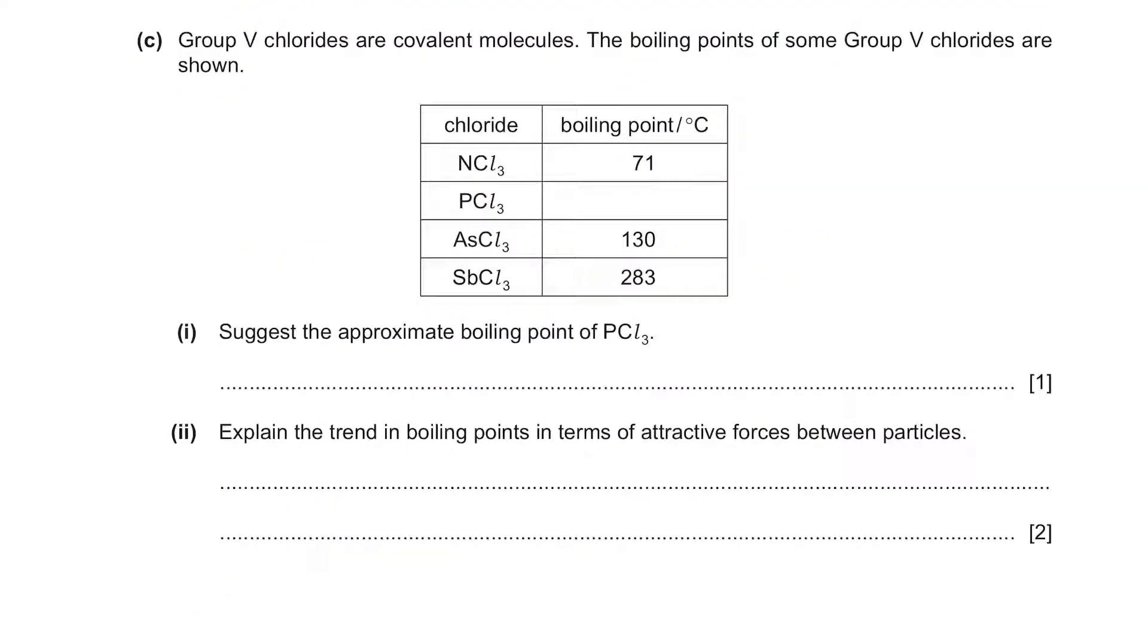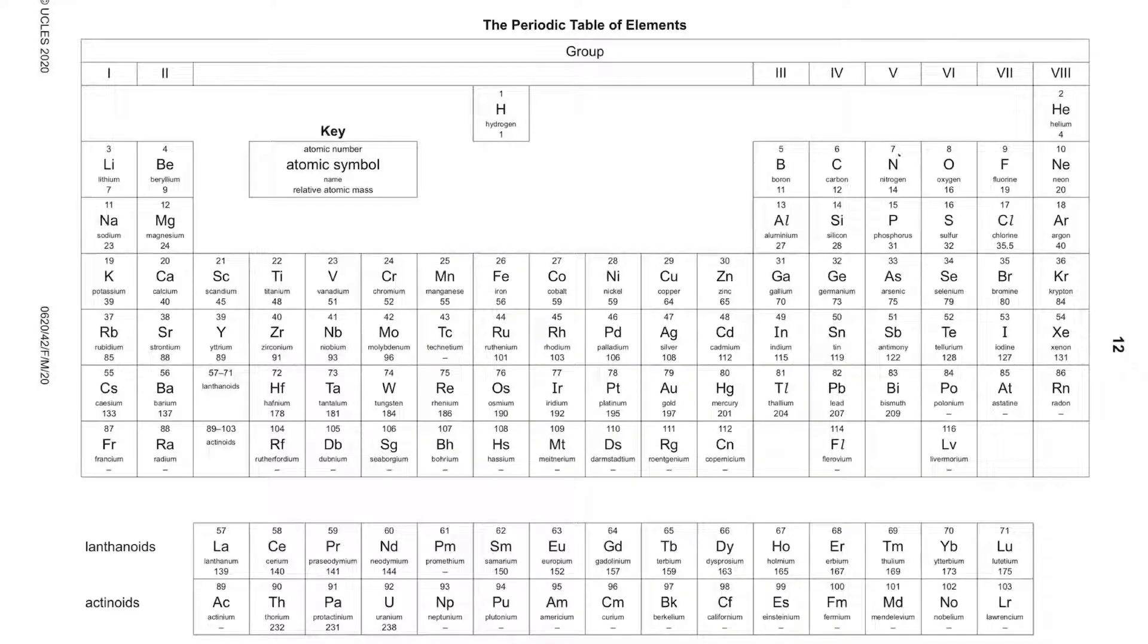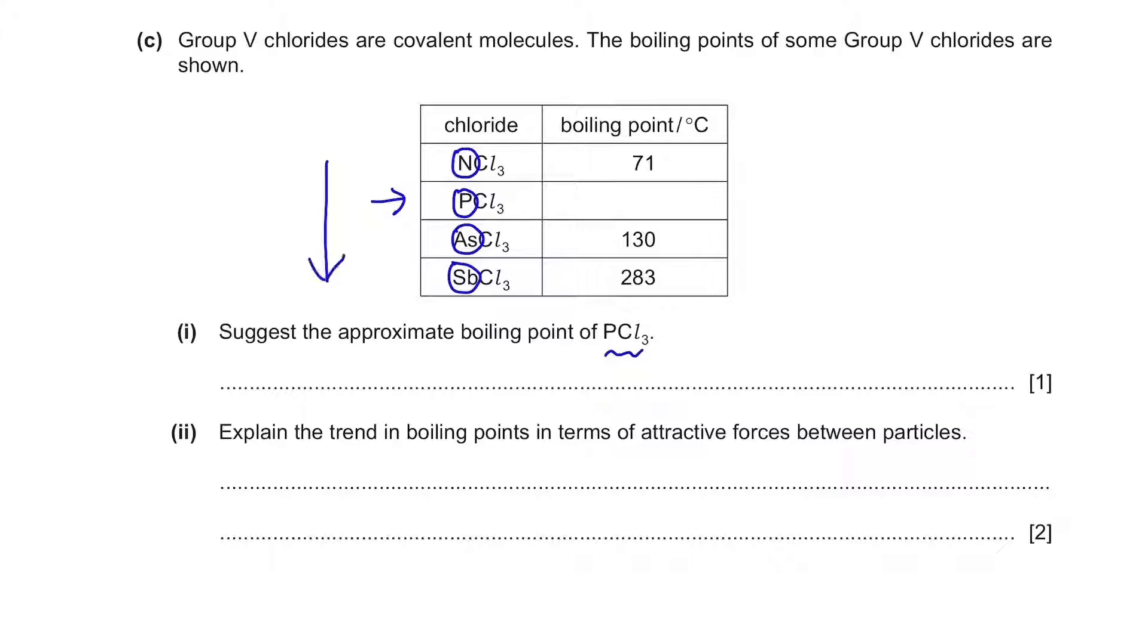Group 5 chlorides are covalent molecules. The boiling points of some group 5 chlorides are shown. Suggest the approximate boiling point of PCl3. Well, these atoms can be found in group 5. And you will notice it's going down the group. So as it goes down the group, you can see that the temperature is increasing. So the approximate boiling point can be any temperature between 71 degrees Celsius and 130 degrees Celsius. So I'll just put 100 degrees Celsius.